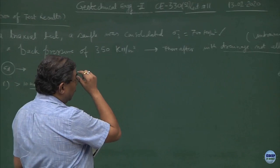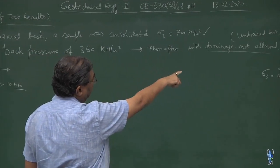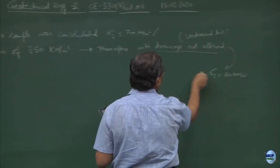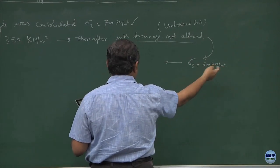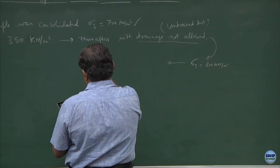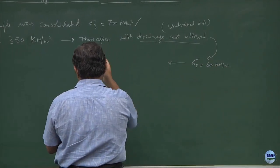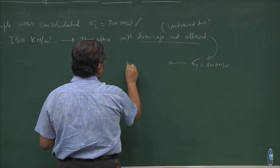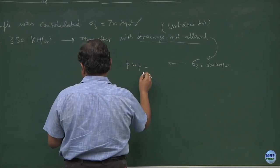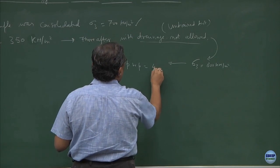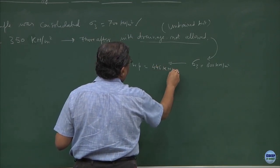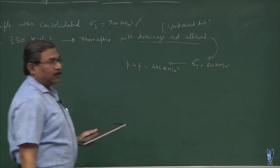Starting from this undrained situation, we have raised sigma 3 to 800 kPa or kN per meter square. And there is a pore water pressure equal to 445 kN per meter square as a result of this torture.